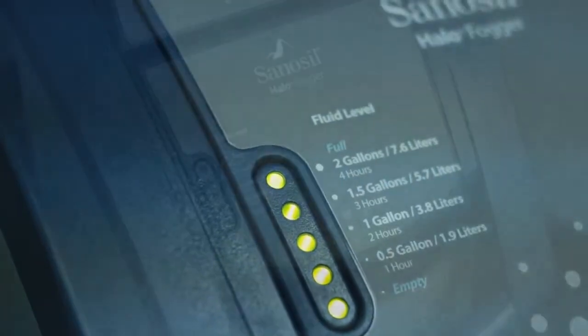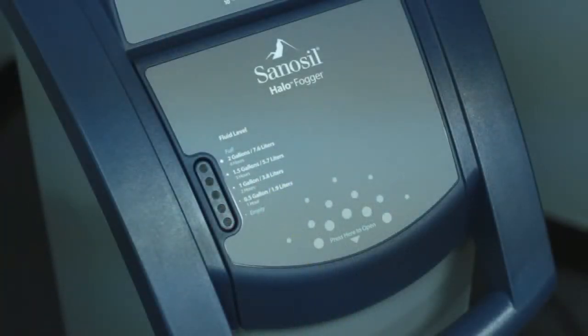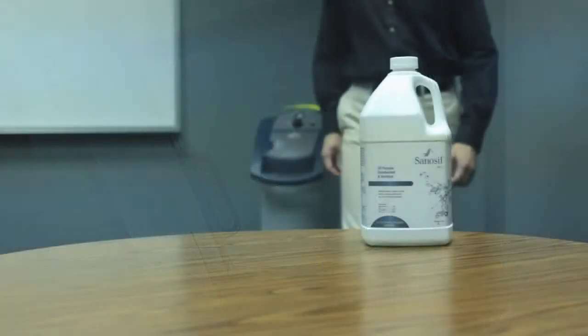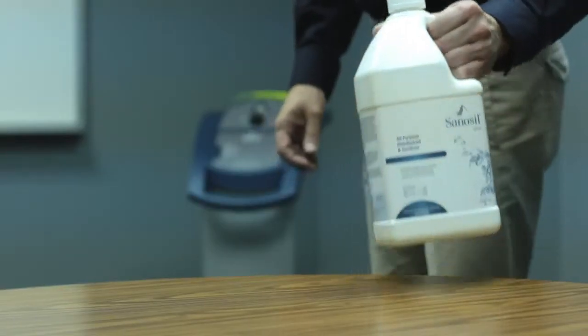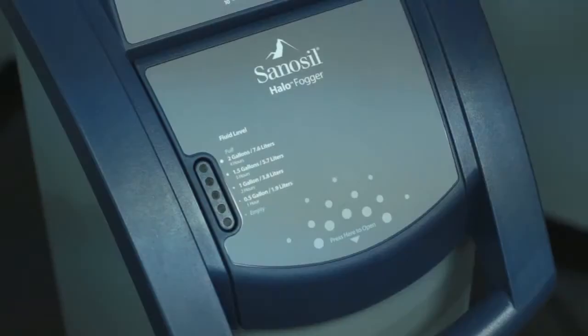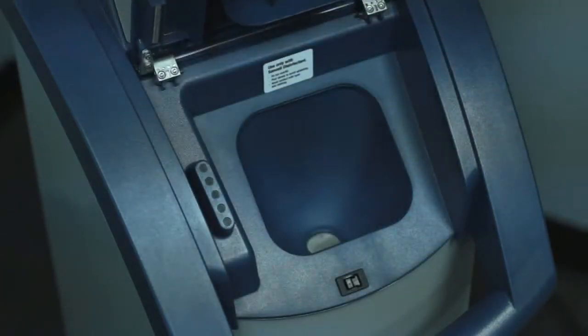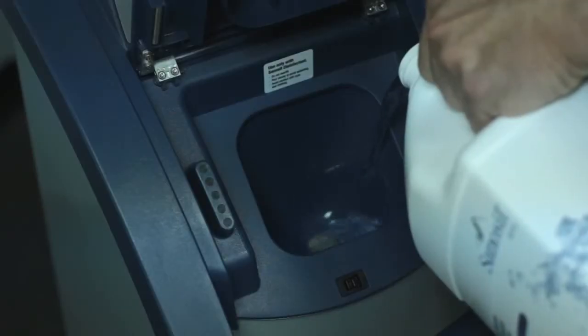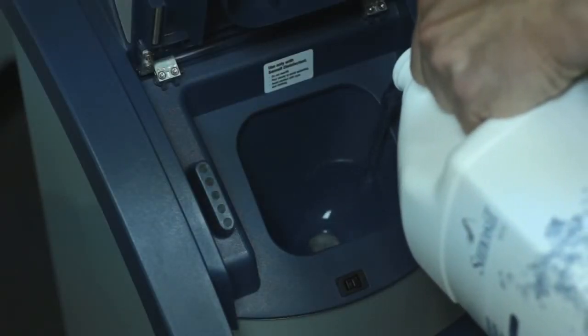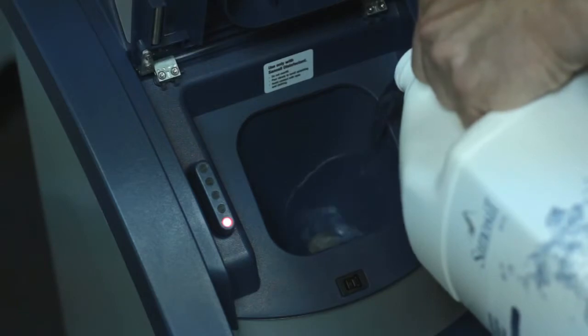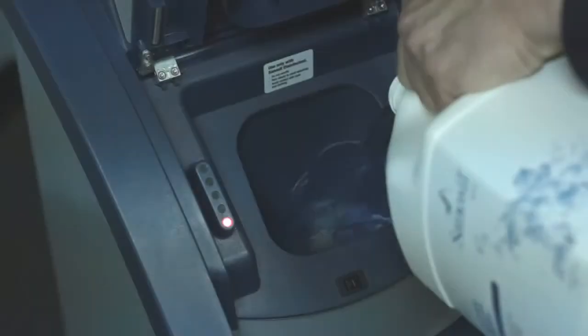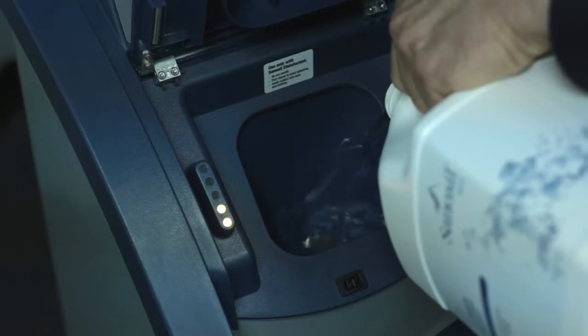The easy to read fluid level indicator will show one red flashing light if the reservoir is empty. Use only Sanosil disinfectant in the Halo unit. Do not dilute. To add fluid, press down on the reservoir door. Then lift to expose the filling funnel. Open a gallon of Sanosil disinfectant and slowly pour the contents into the funnel to avoid splashing. The fluid level indicator lights will illuminate to show how much disinfectant is in the unit.